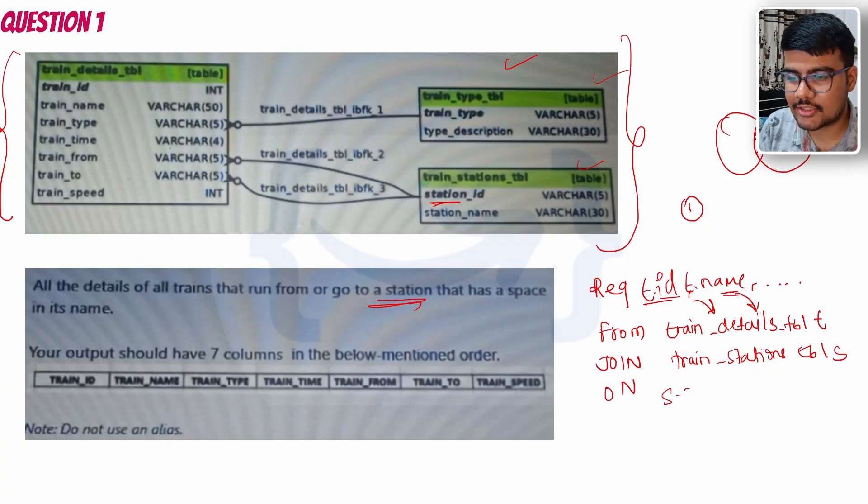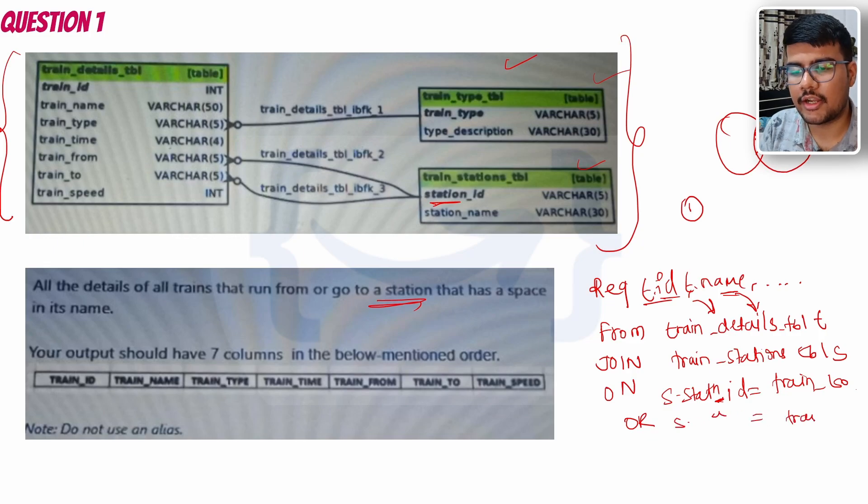Now you need to tell on which condition you are joining it. So whatever is available, I will write it as s.station_id is equivalent to train.to, or this criteria you can do, or you can do station_id equals to train_from. Simple - again it will be joined.